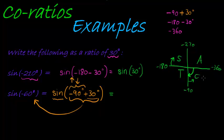Only cosine is positive in that quadrant, so sine is going to be negative, even though it changes to the cosine function of 30 degrees. And there we've written sine of negative 60 degrees as a ratio of 30 degrees.